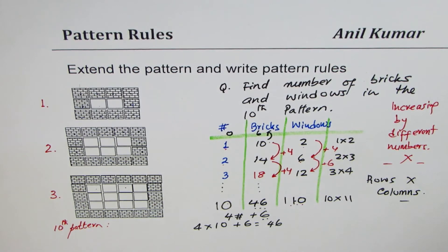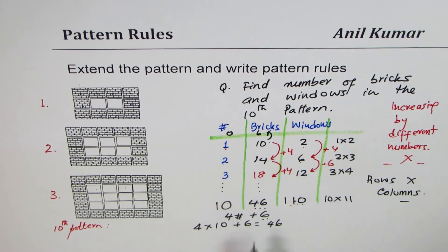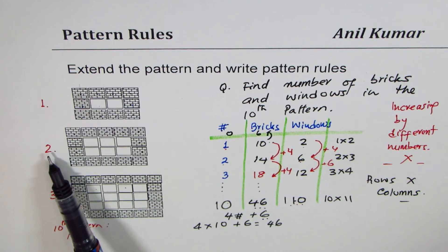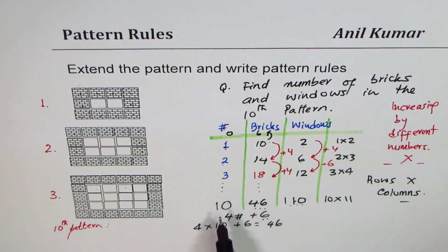So that is how you count whenever you have an arrangement in rows and columns. I hope that helps you understand when and how to use multiplication to find pattern rules. The pattern rule for bricks is: multiply by four and add six — or equivalently, start at 10 and add four each time. This is called an explicit rule, which you can use to find the 10th, 50th, or 100th pattern. For windows, the rule is rows times columns: pattern number times pattern number plus one. For ten, that's 10 times 11 to get 110. Feel free to share your comments — thank you and all the best!